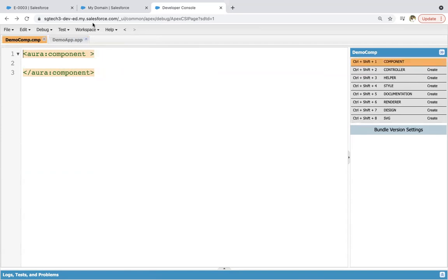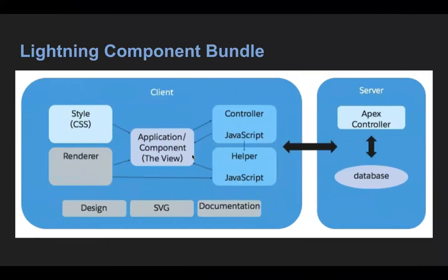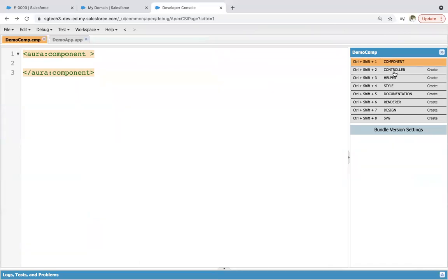Going back to the diagram, in the middle you can see 'application/component' — this is known as the view, where you implement all your markup that will render in the browser. When creating a lightning application you write markup in the application file; when creating a lightning component you write markup in the component file. Whatever markup you write will be rendered when you run your application or when your component is displayed on the UI.